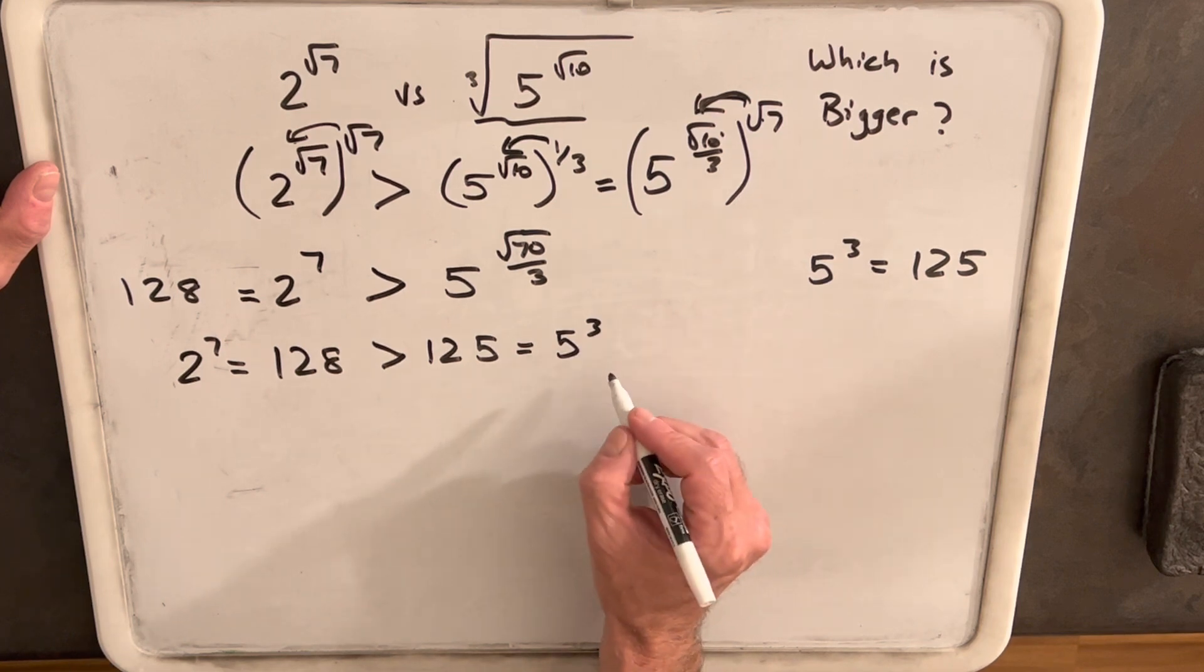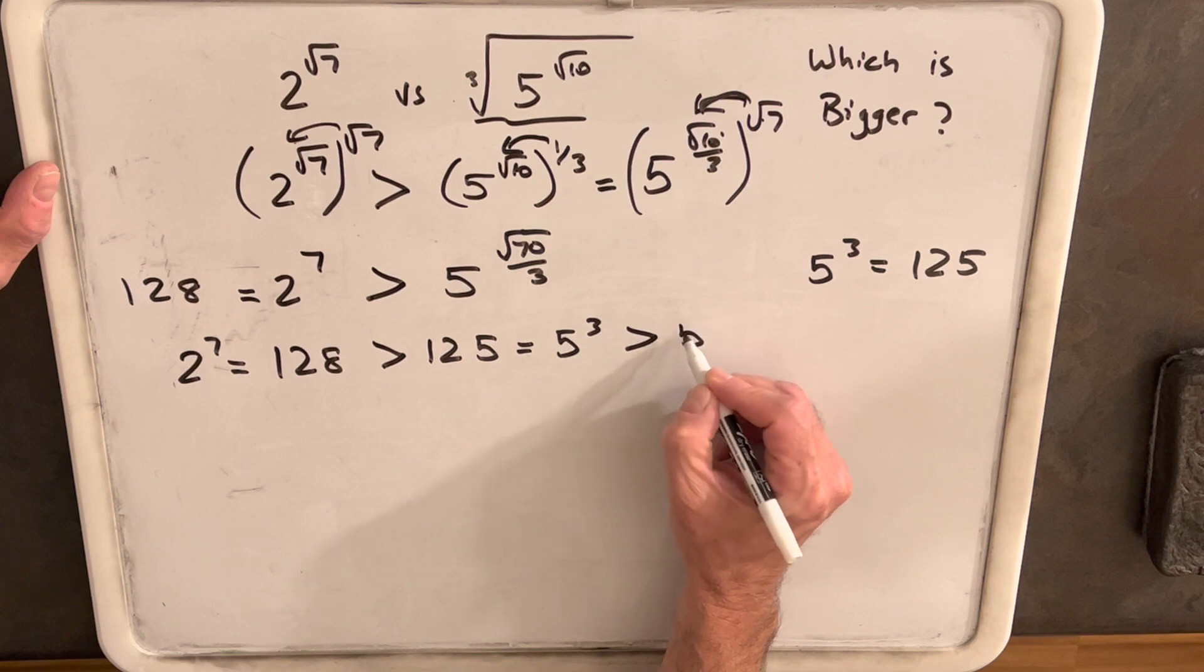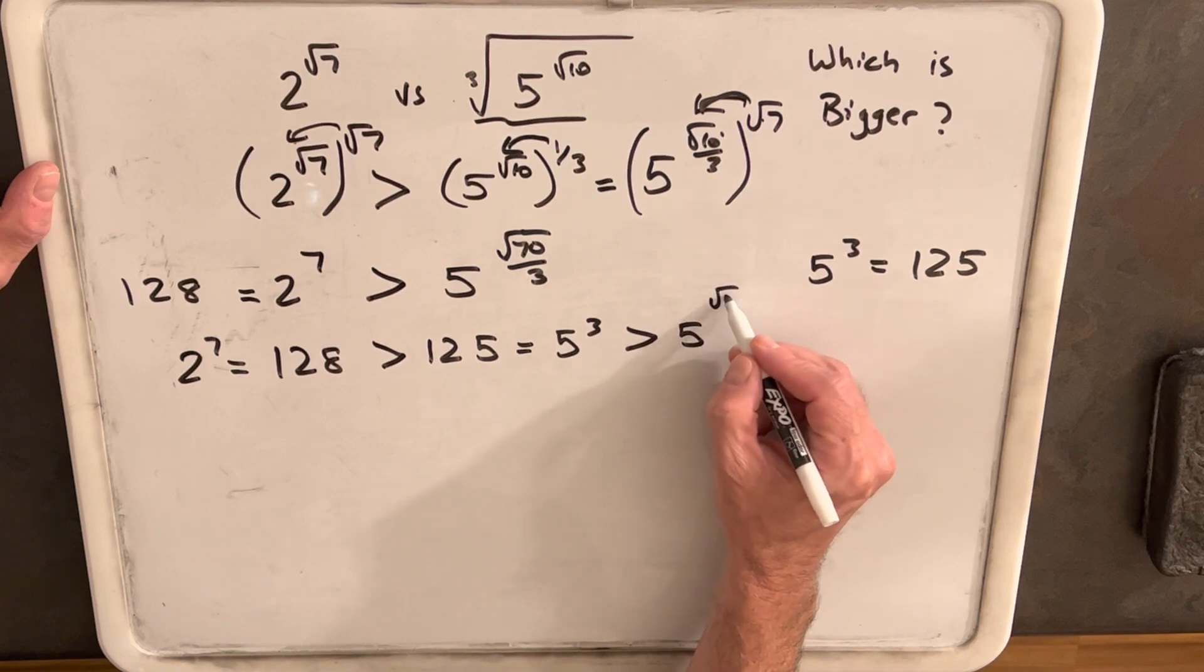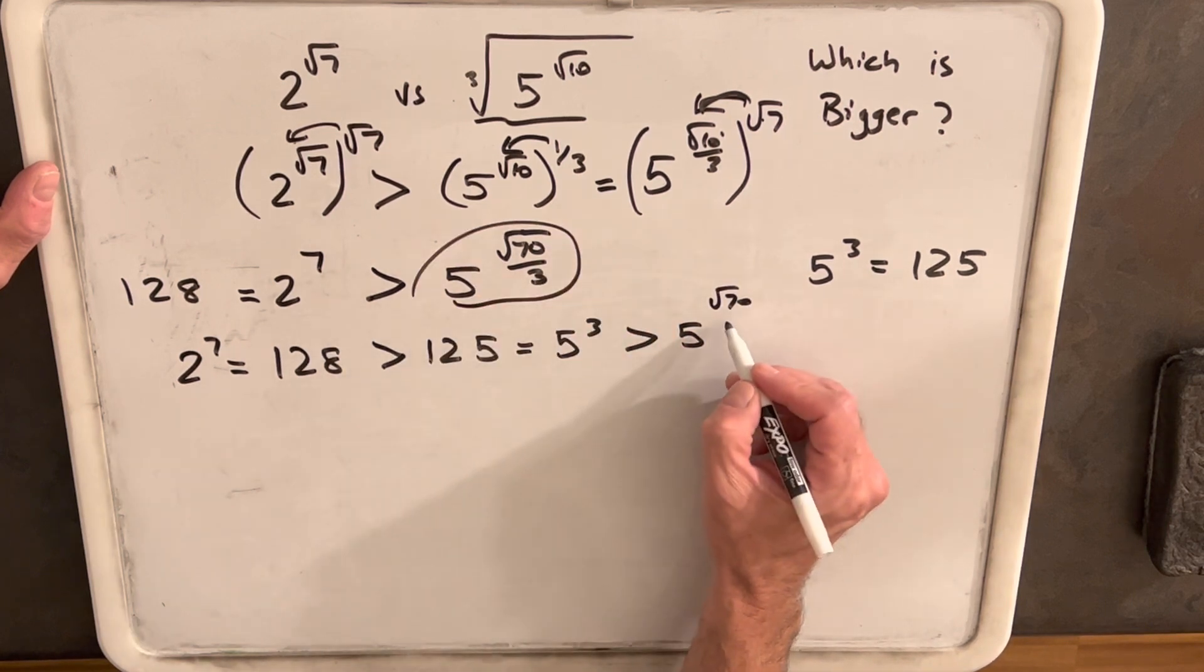And for this whole thing to work, we want 5 cubed to be greater than 5 to the square root of 70 over 3.